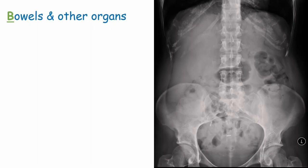As part of B in our mnemonic, we also need to check other organs. These are mostly tricky to see, but it's important to attempt to identify them to rule out any obvious abnormalities such as organomegaly.